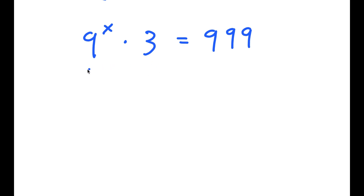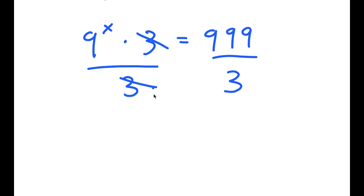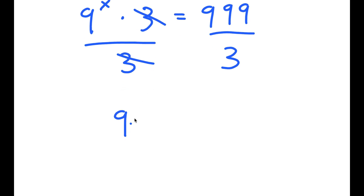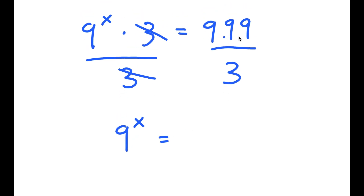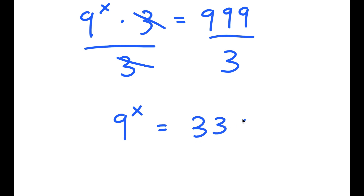From here, I'm going to divide both sides by 3. So these two cancel out, and I get 9 to the power of x is equal to 999 divided by 3, which is 333.